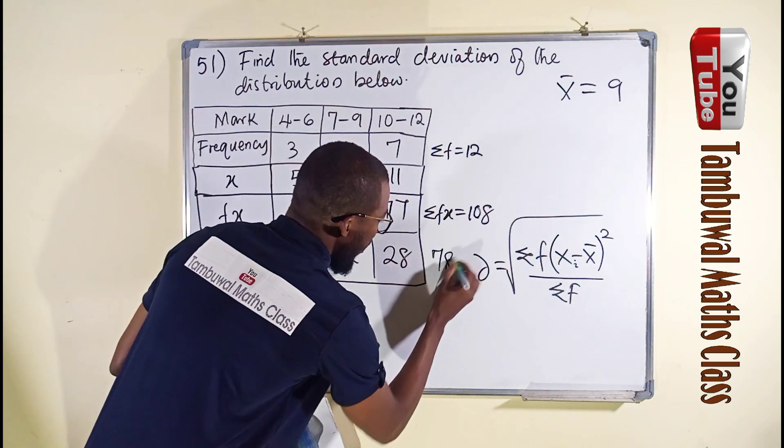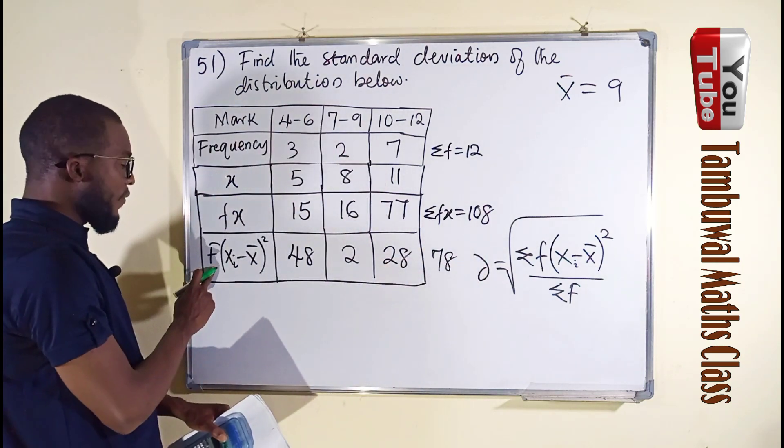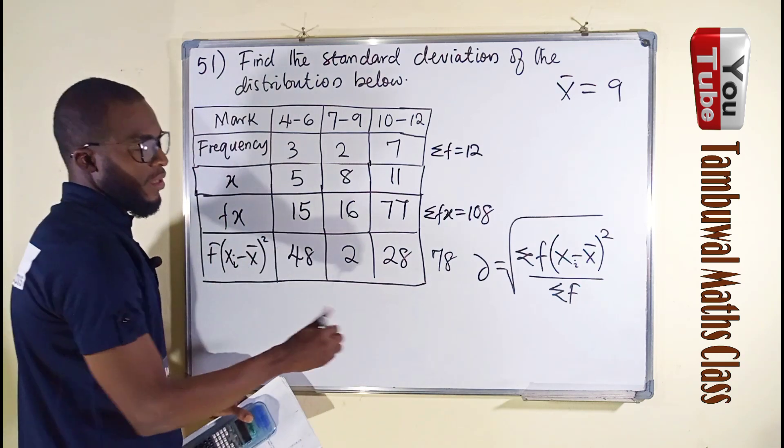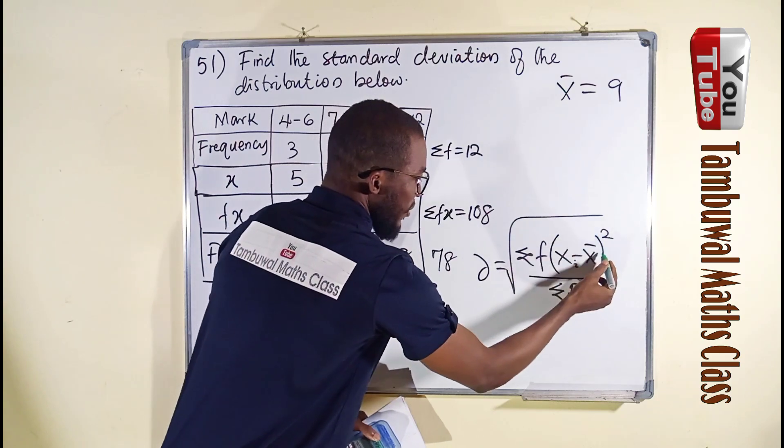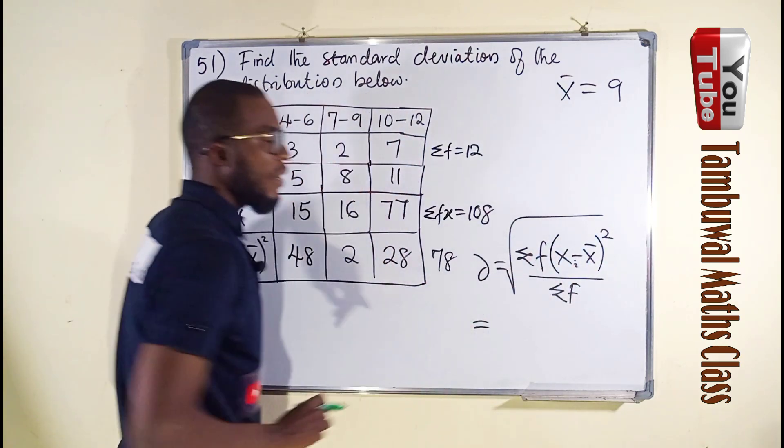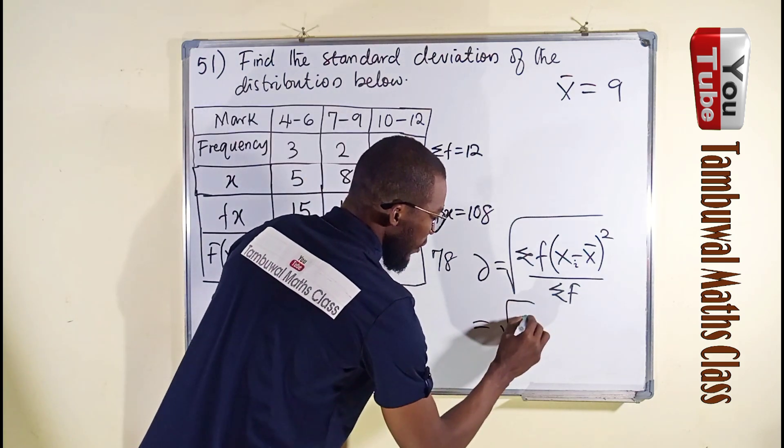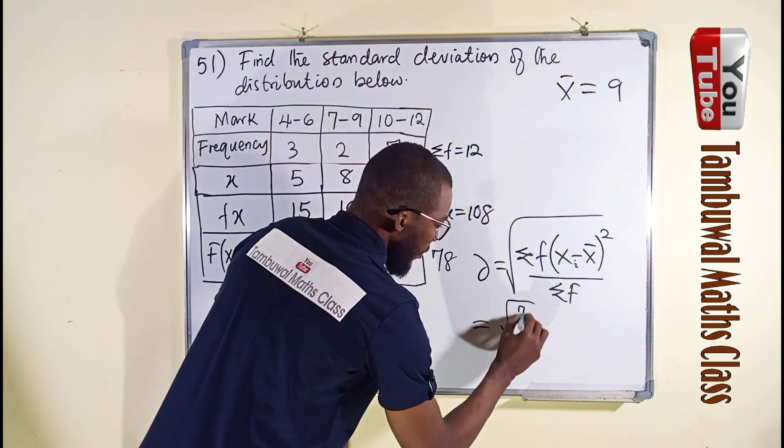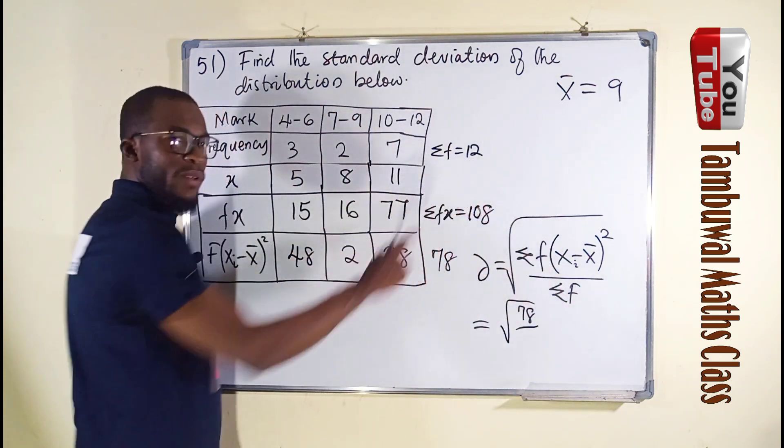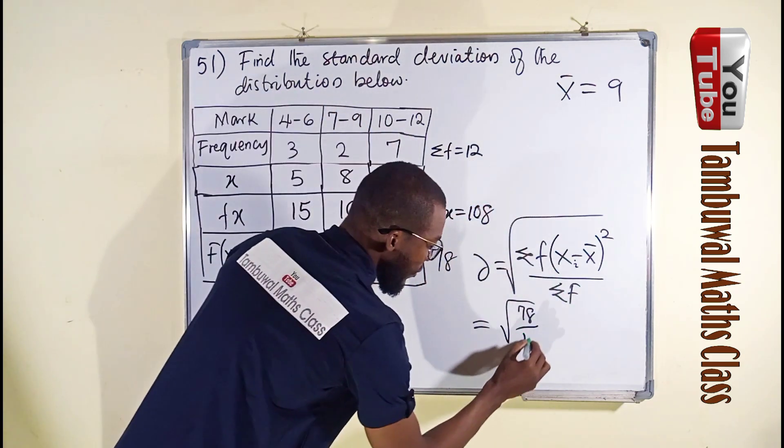So we have 78 here as the summation of f of x minus x bar squared. So finally, we can substitute here to obtain our answer. This is the square root of 78 divided by summation of f, which we have here as 12. This is 12.